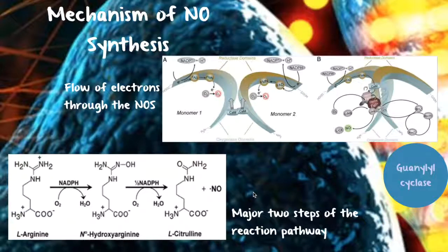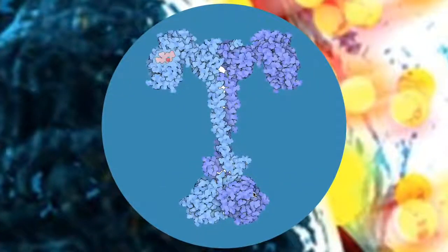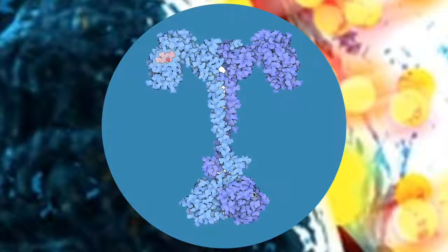The nitric oxide formed by NOS can act on several target enzymes and proteins, one of which is guanylyl cyclase. This enzyme initiates a cascade of responses inside the cell. When it binds nitric oxide, it becomes active and converts GTP into cyclic GMP, which then acts as a second messenger, activating kinases that mobilize all the molecules needed to perform the desired physiological function.